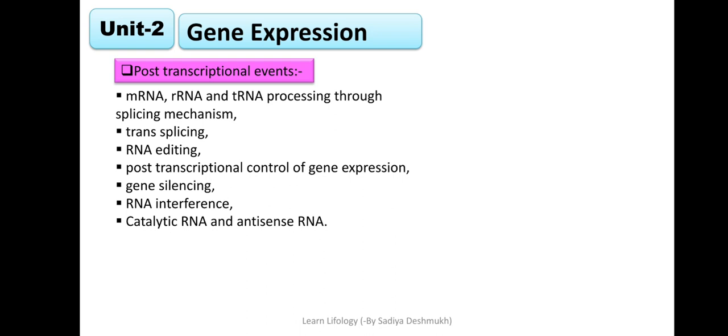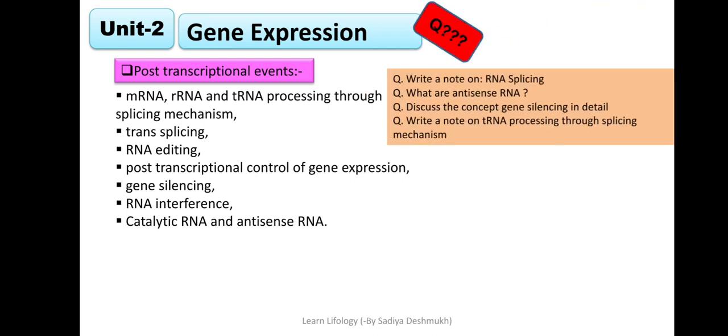The second point, post-transcriptional events, can have questions like: RNA splicing, antisense RNA (write a note), or discuss gene silencing and tRNA processing through splicing mechanism. These questions can come from this section. The remaining points like catalytic RNA and antisense RNA can appear as short questions in the fifth question for two, three, or four marks.